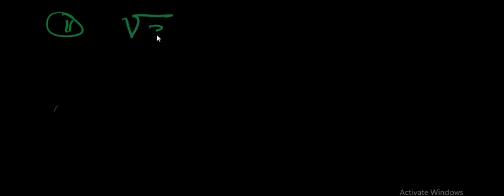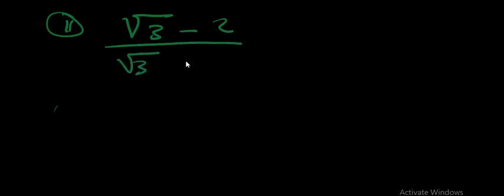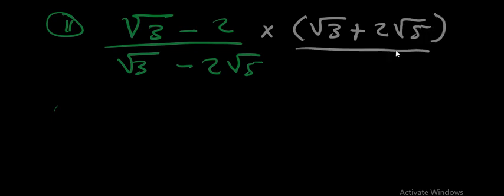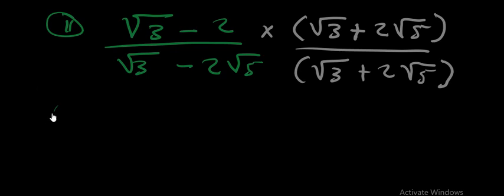The second example is: rationalize square root 3 minus 2 over square root 3 minus 2 square root 5. Like I said, the first thing you're going to do is multiply everything by the conjugate of the denominator. The conjugate of the denominator here is simply square root 3 plus 2 square root 5, and we multiply both numerator and denominator by this conjugate.